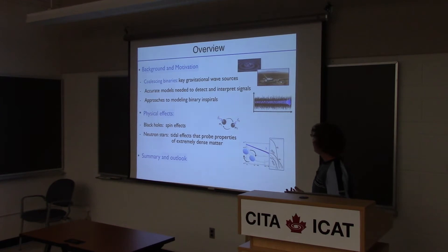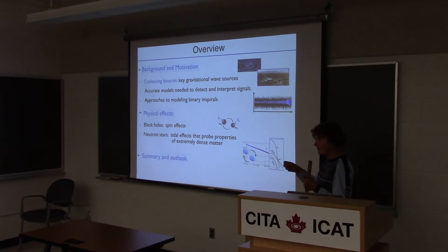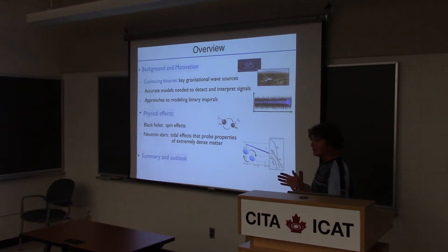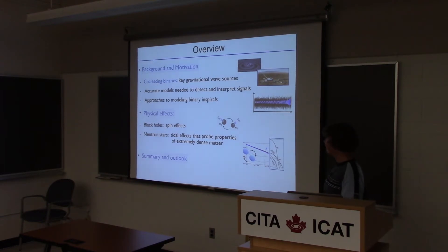I will talk about waves produced by astrophysical objects that are accelerating. One possible mechanism would be a binary in orbit around one another, and that will generate a time-varying quadrupole. So there's a time-changing gravitational field which produces gravitational waves that we can hope to detect on Earth. These binaries are key sources for gravitational wave detectors on Earth.